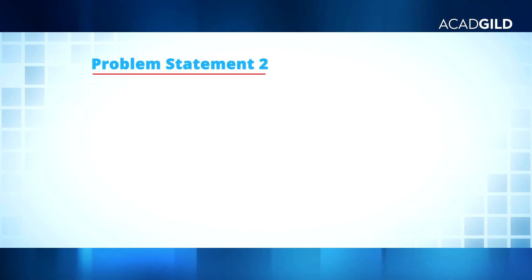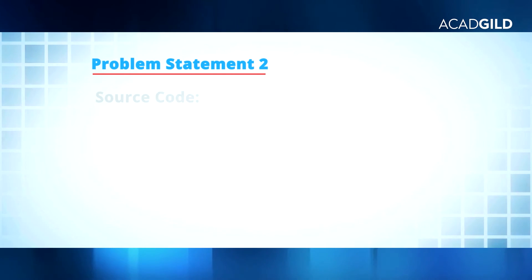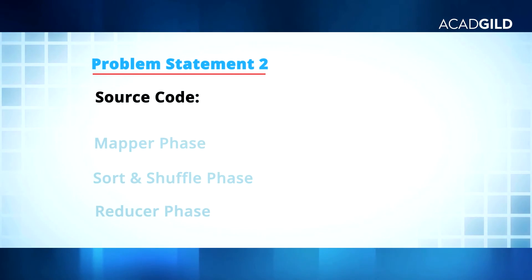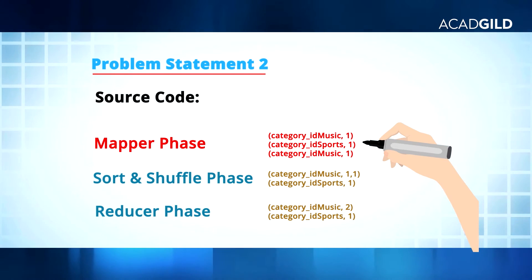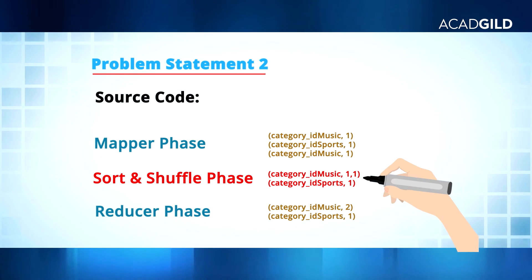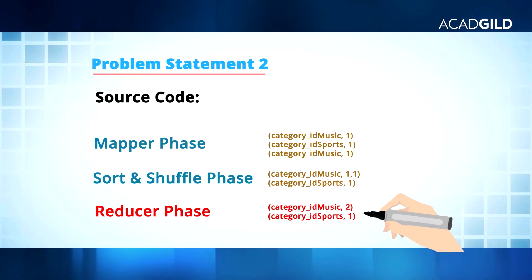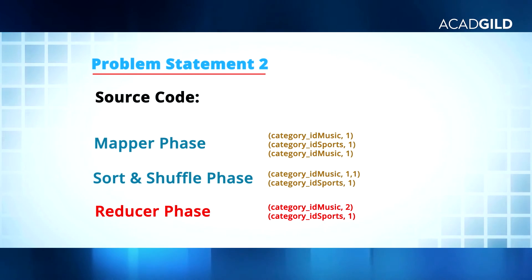Problem Statement 2: In this problem statement we will find the top 10 rated videos on YouTube. From the mapper we need to get the video ID as key and rating as value, which will be passed to the shuffle and sort phase. These values will be further sent to the reducer phase where aggregation will be performed.